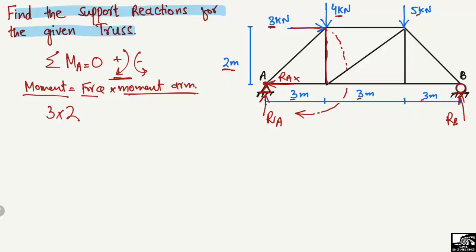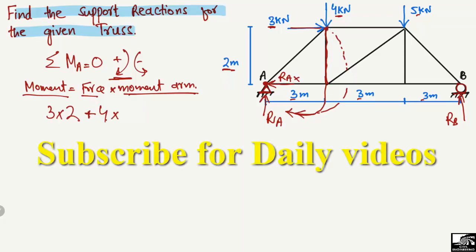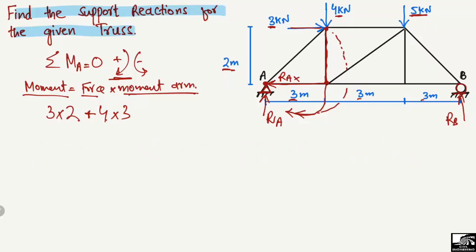The next force creating a moment about point A is the 4 kilonewton load acting vertically. It also creates a clockwise moment about point A, so it is positive: 4 multiplied by 3 meters, which is the distance from that load to point A. The third force is the 5 kilonewton load, also creating a clockwise moment: 5 multiplied by 6 meters, since the distance from that point to A is 3 plus 3 meters.